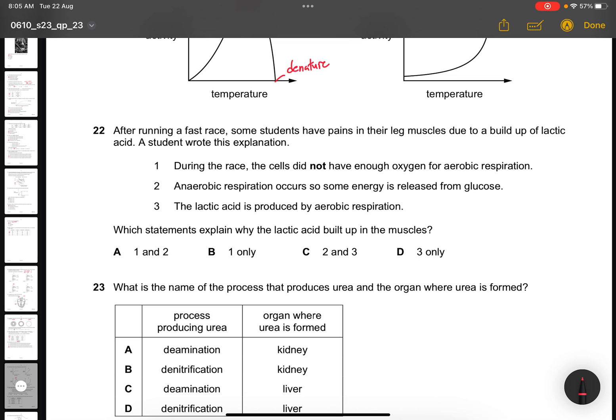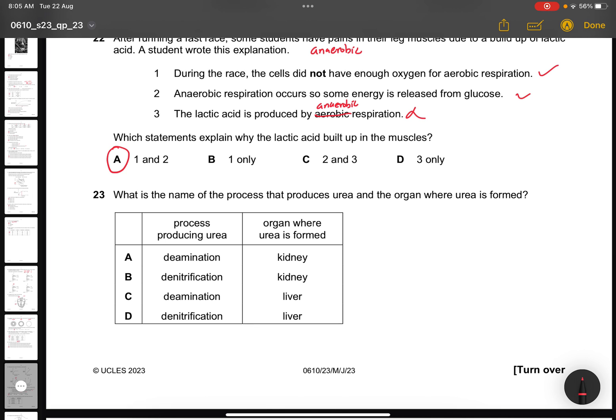Question 22. After running a fast race, some students have pains in their leg muscles due to a buildup of lactic acid. A student wrote this explanation. During the race, the cells did not have enough oxygen for aerobic respiration. Correct, because this is the process of anaerobic already now. Anaerobic respiration occurs so some energy is released from glucose. Yes, because glucose is also a reactant for anaerobic respiration. The lactic acid is produced by aerobic? No, it's produced by anaerobic. So the answer is A. Question 23. What is the name of the process that produces urea and the organ where the urea is formed? C, deamination and the liver, because denitrification should be in the nitrogen cycle. Deamination is the process and the liver is where it produces the urea.